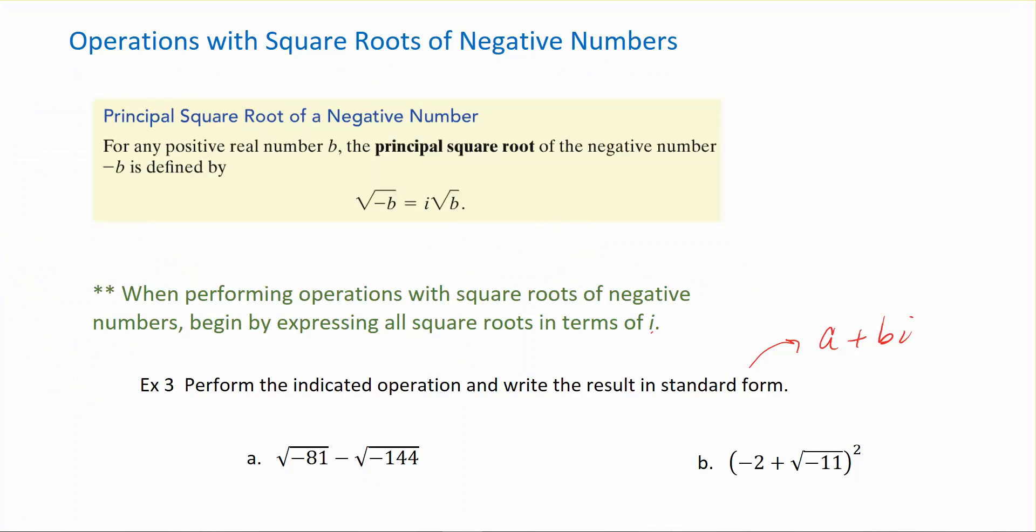In other words, when we have the square root of a negative number and we change that into i times the square root of that number, how do we handle the operations on this type of scenario?